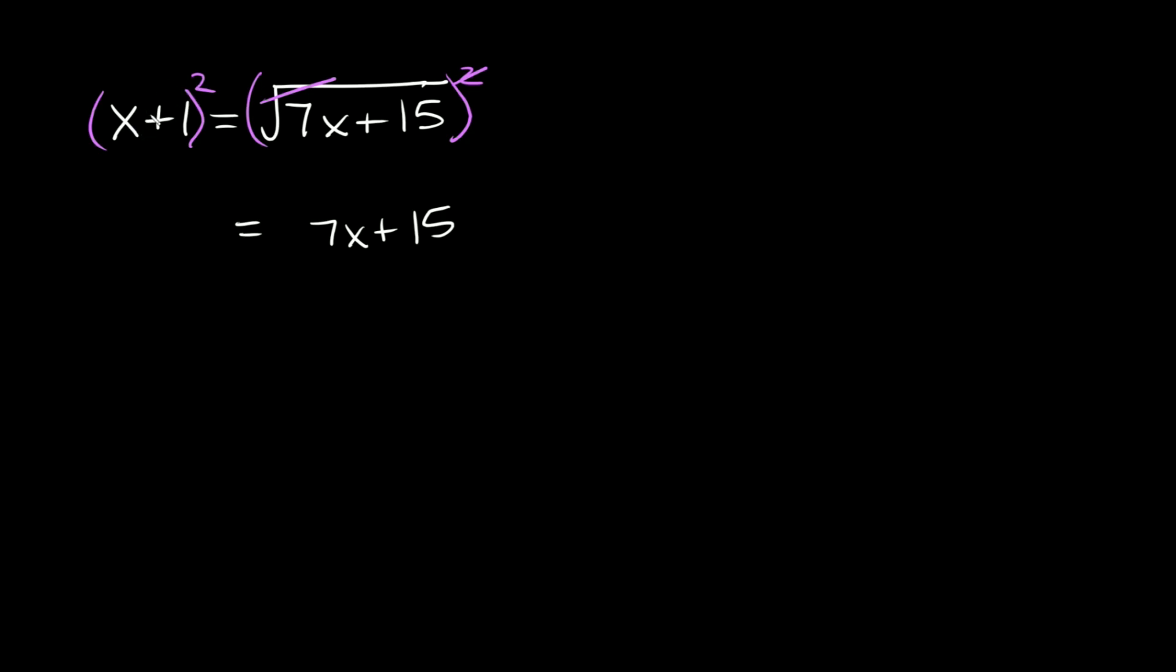Now x plus 1 squared, those are just two binomials, we can multiply them together. So I can write it out as x plus 1 times x plus 1. Now in order to multiply these two guys together, we can just FOIL.